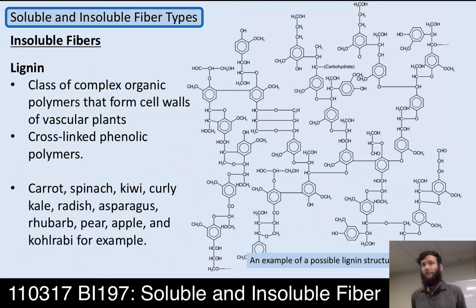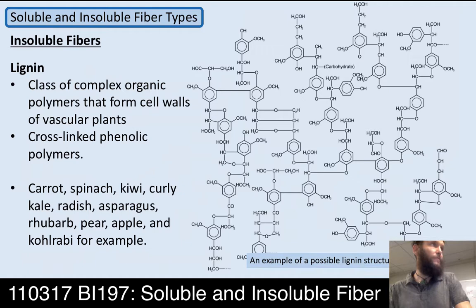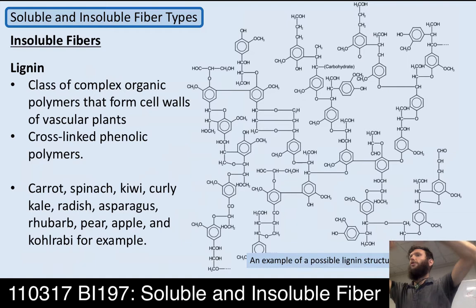Lignins are in all of the natural vegetable foods you eat: carrot, spinach, kiwi, curly kale, radish, asparagus, rhubarb, pear, apple, kohlrabi, and many others. The exact biological properties that one type of lignin would have over another is an active and enormous area of study. Someone asked about kohlrabi — it's a kind of baseball-shaped vegetable, green, with thin leafy stalks you can braise. The baseball-shaped body can be sliced and sautéed or eaten raw on salads. It tastes a lot like broccoli stem and is pretty popular at farmer's markets.